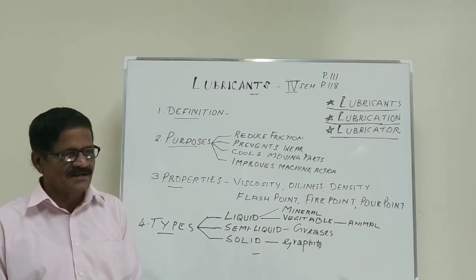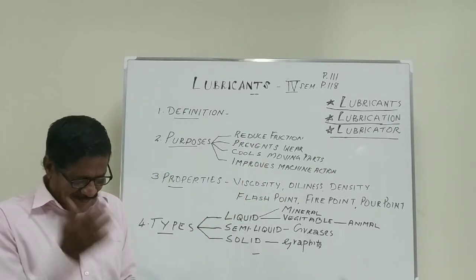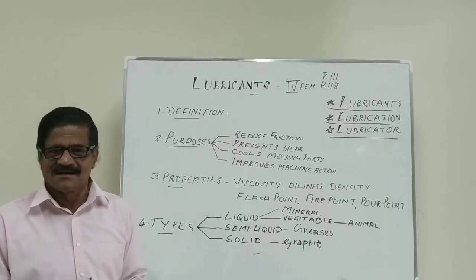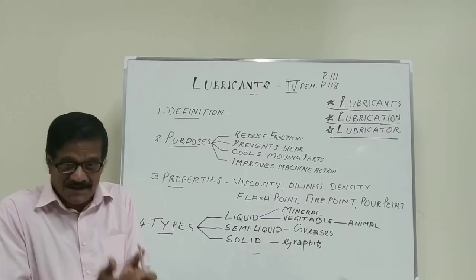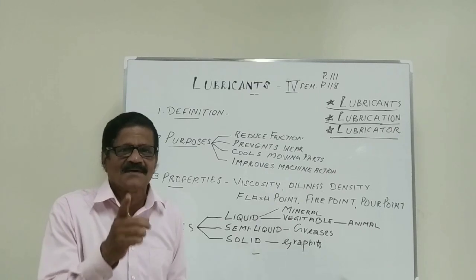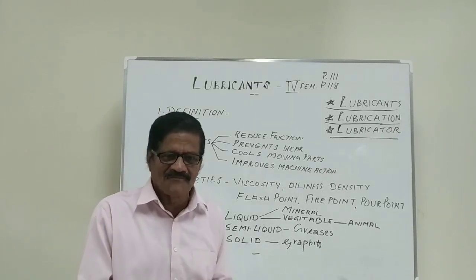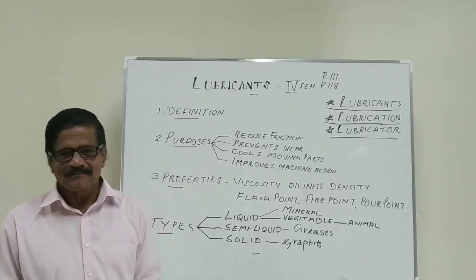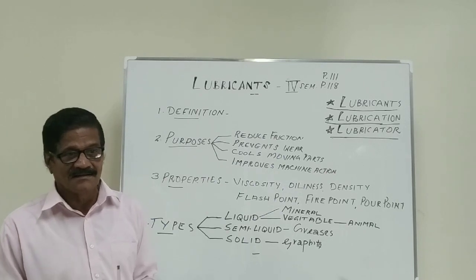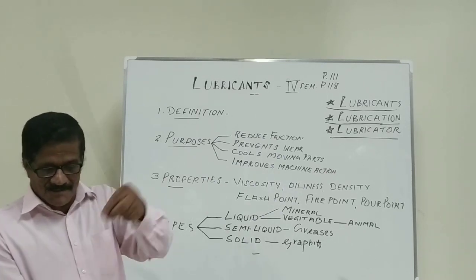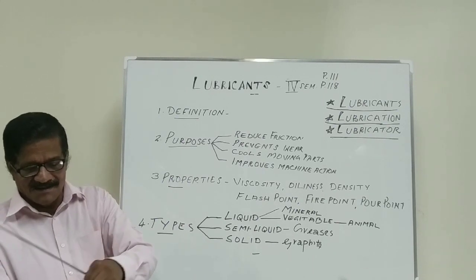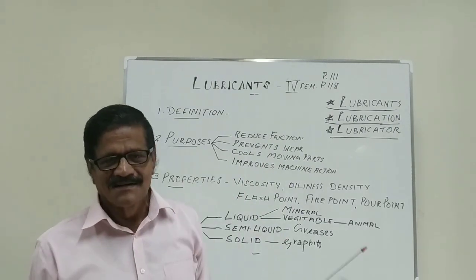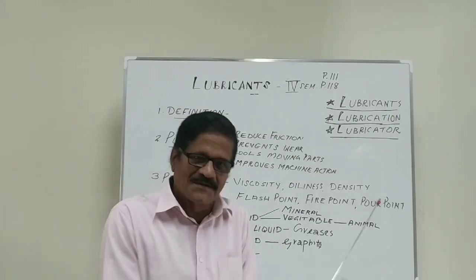When there is viscosity, the pressure is maintained in the system — it is the capacity. Now, there is pressure on the machine. If there is pressure, the viscosity determines the capacity. Viscosity is also related to oiliness. The oil film is what we rely on — we have to maintain it properly. When we apply it to the surface, we get the capacity of the liquid lubricant.